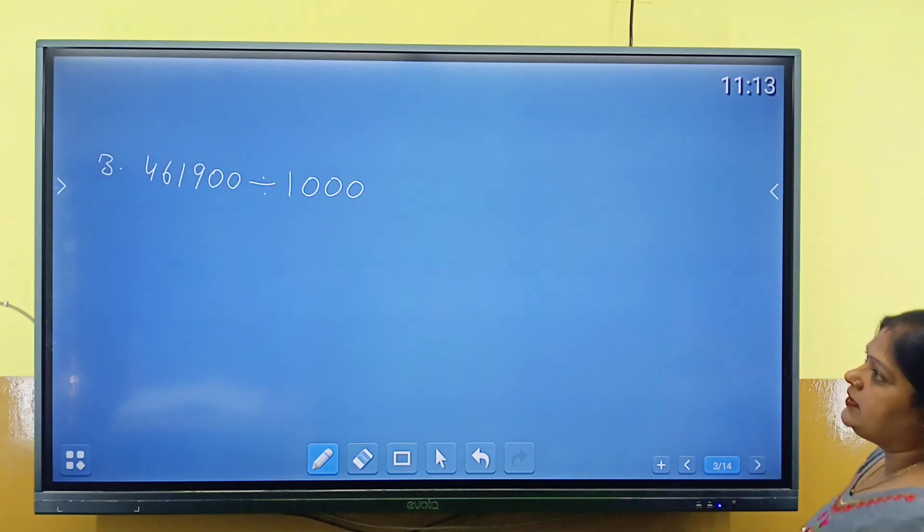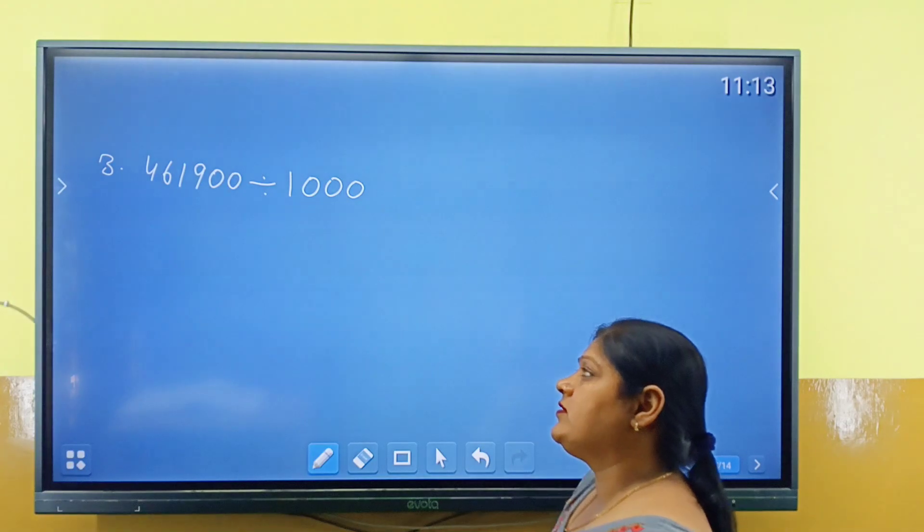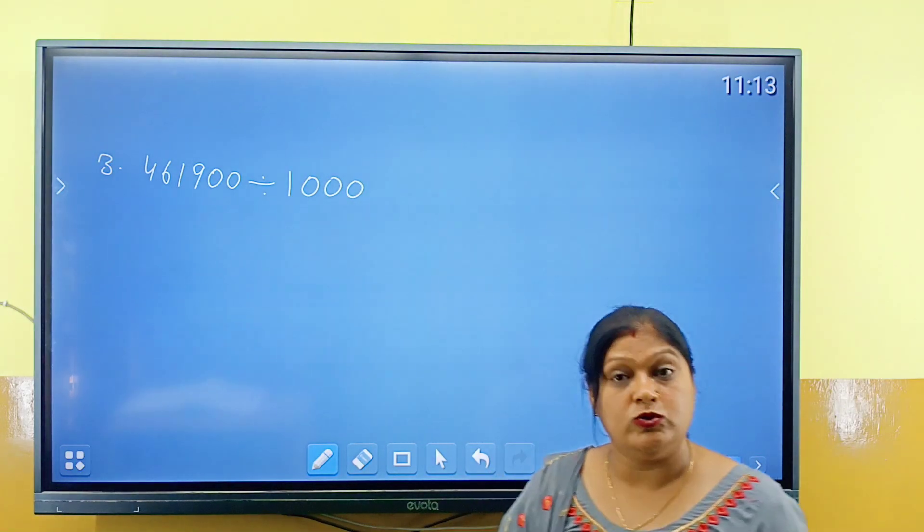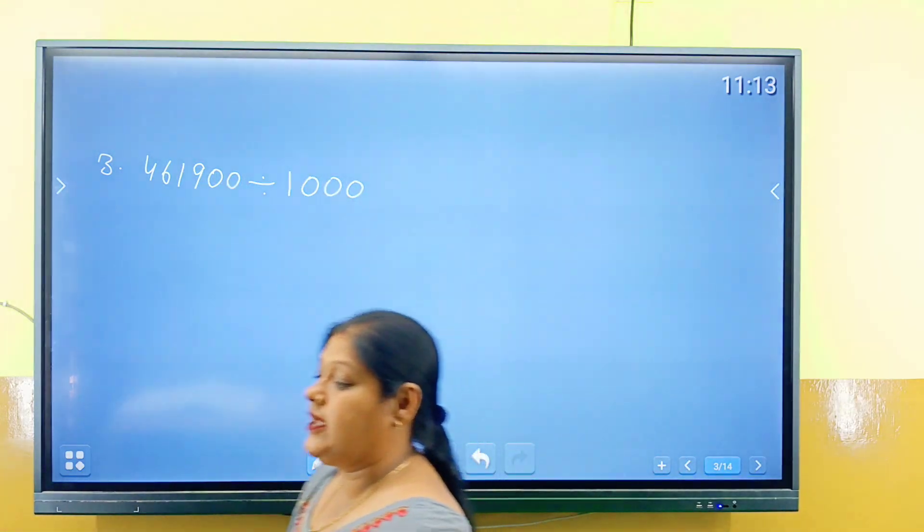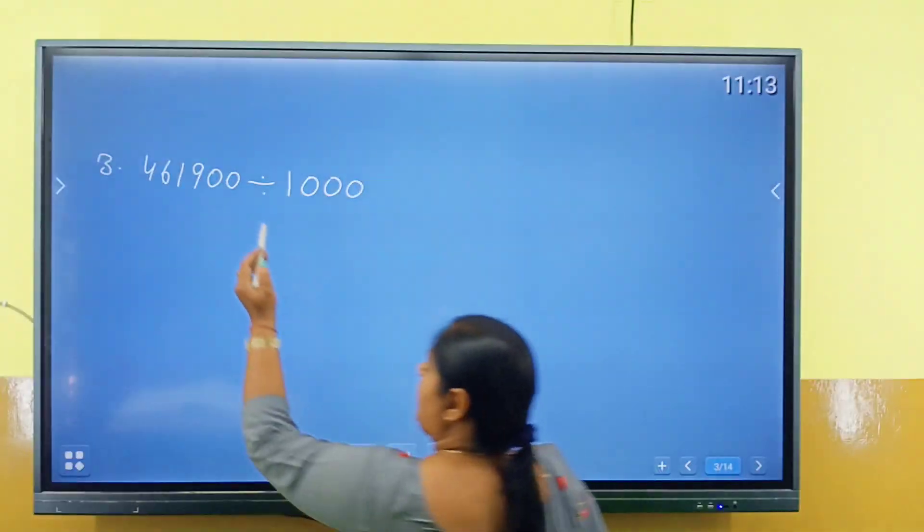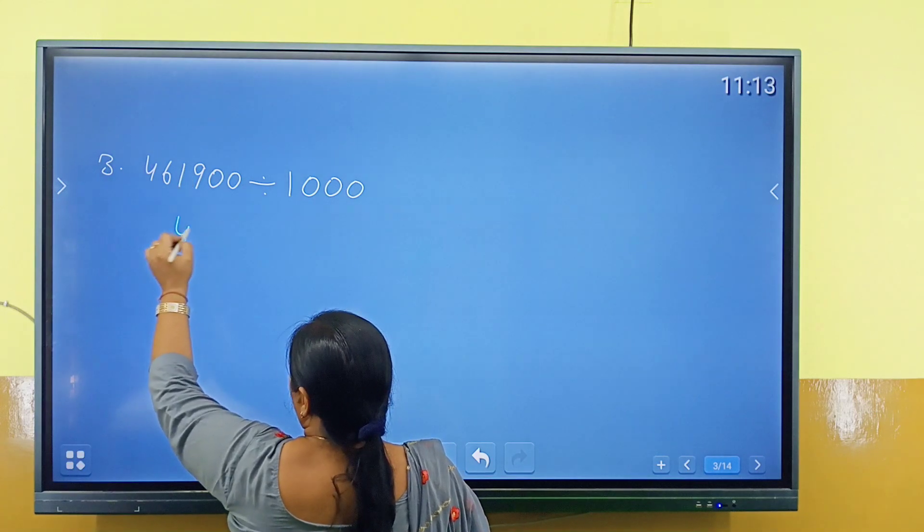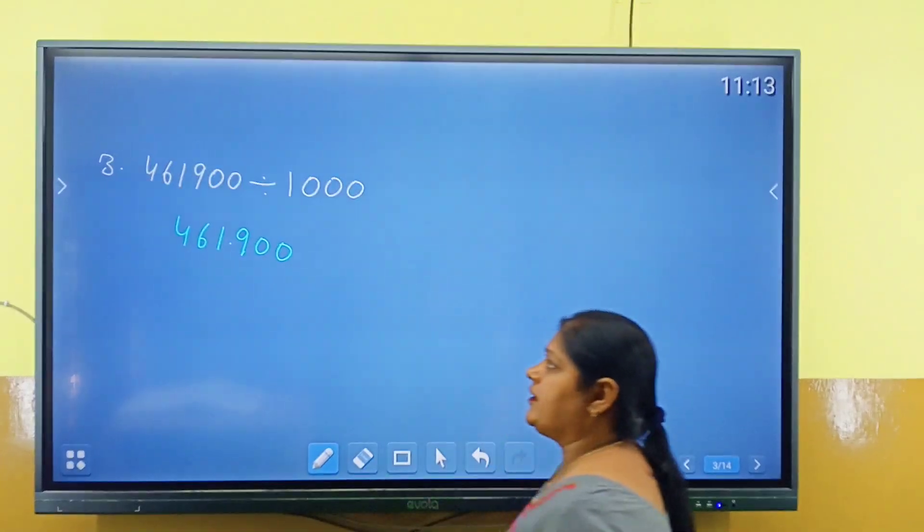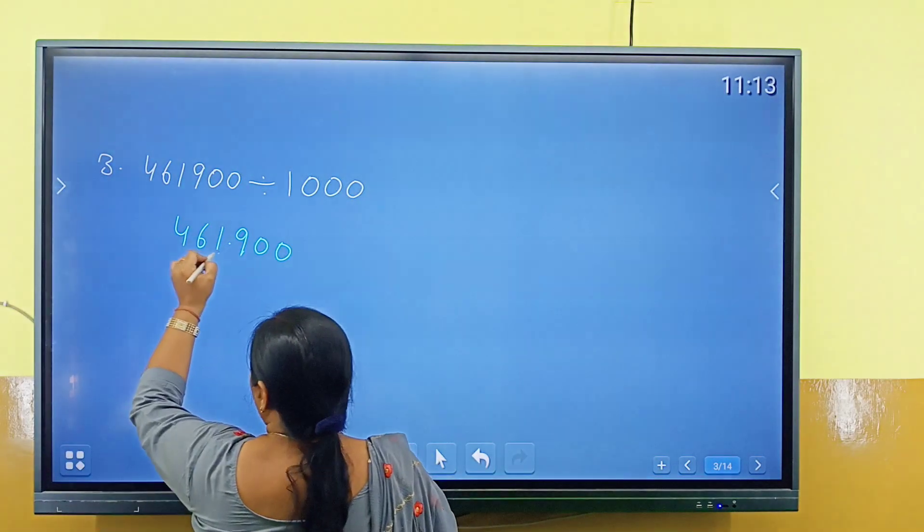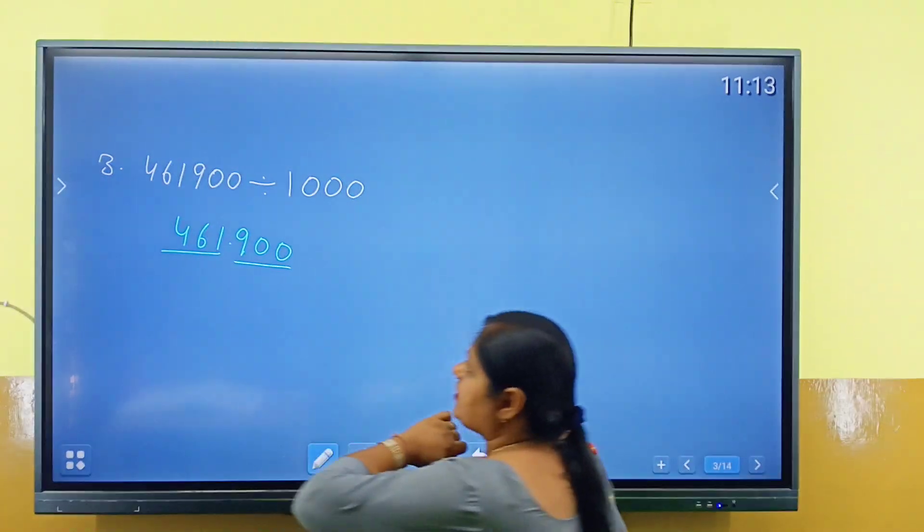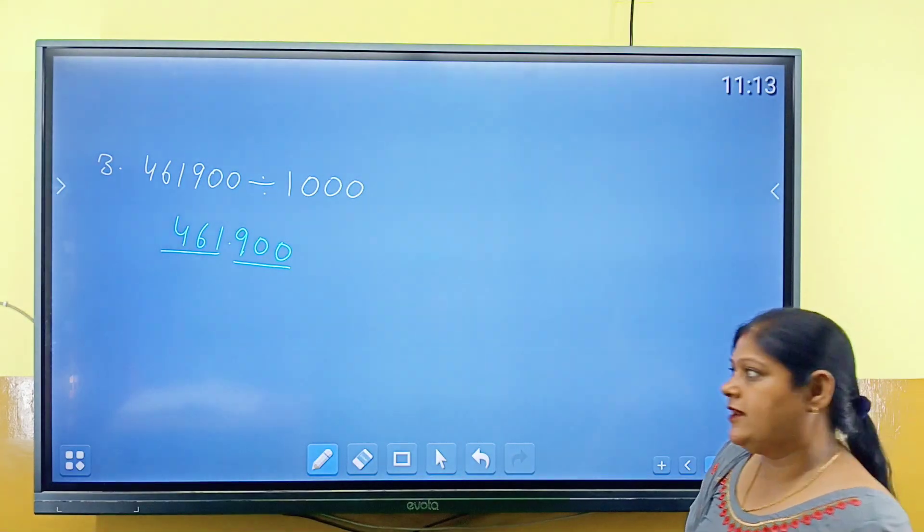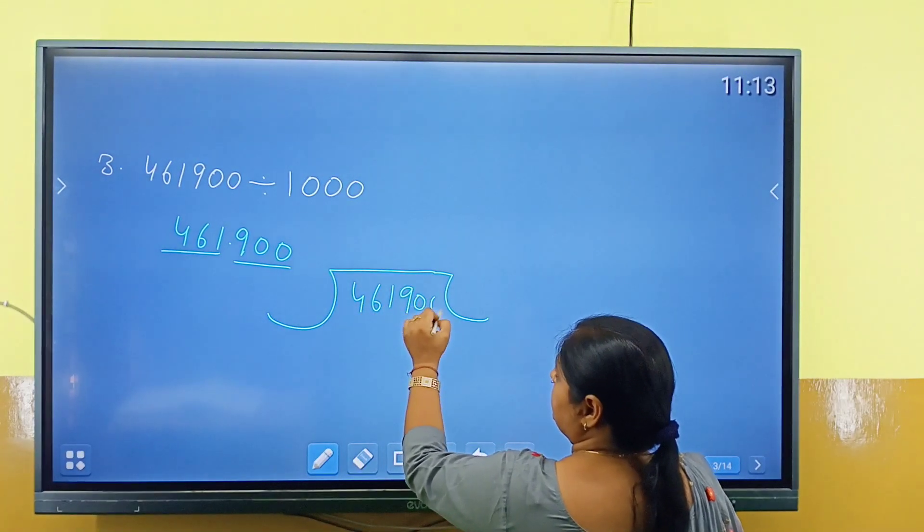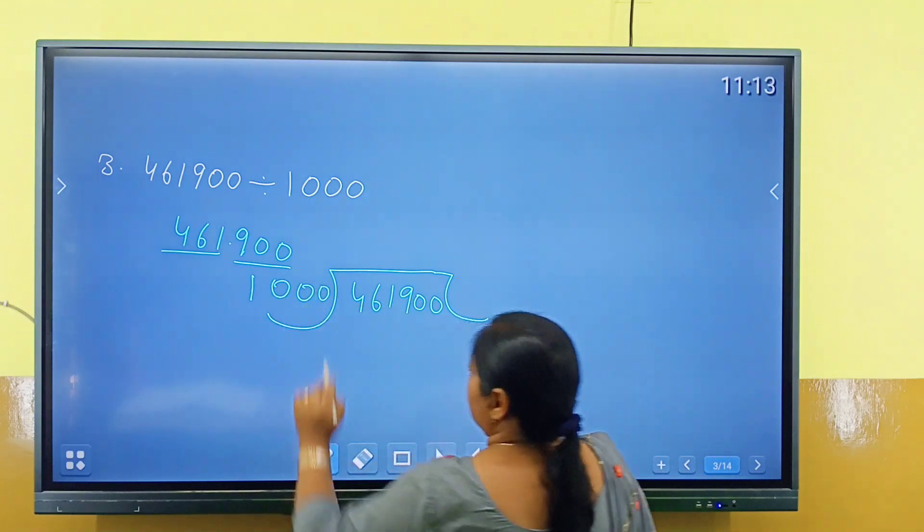Next question we have got number 461,900 divided by 1000.